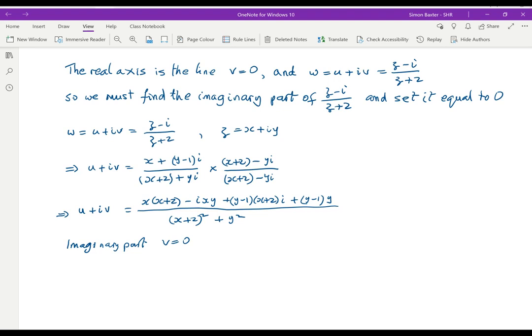Imaginary part, that gives us the real axis. And so this gives us just looking at the imaginary part, we get minus xy plus y minus 1 times x plus 2 equals 0. I'll just show you the imaginary part here. Minus xy and then the other bit with an i in is y minus 1 times x plus 2. If we're setting the imaginary part equal to 0 the denominator doesn't matter. Working this out, we've got minus xy plus xy. And then we get 2y minus x minus 2 equals 0.